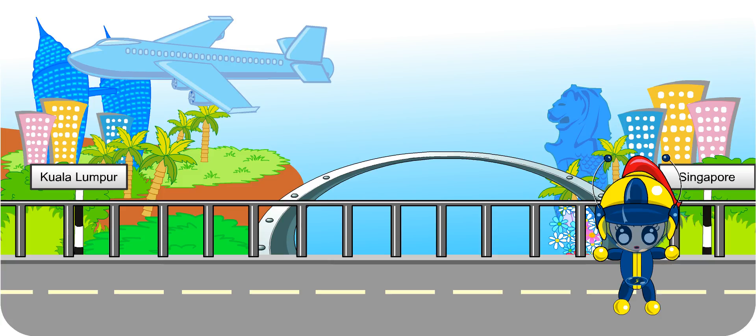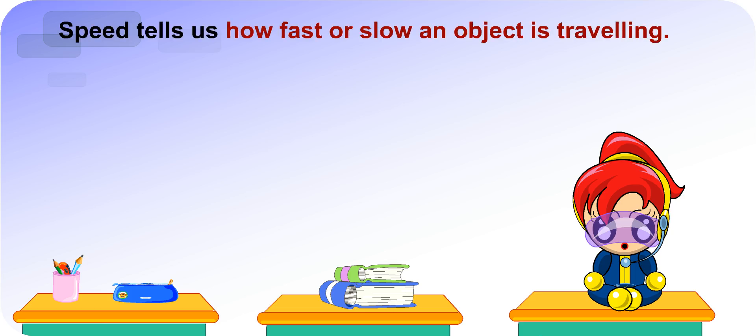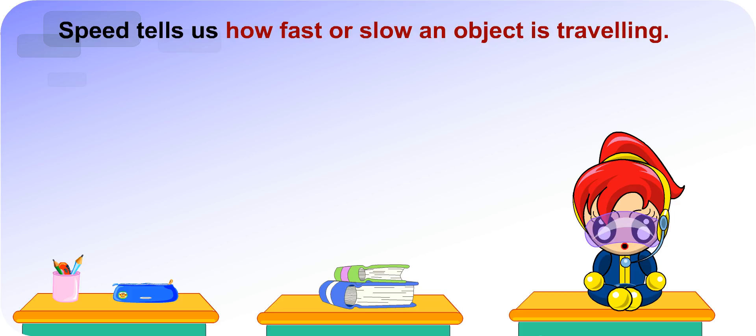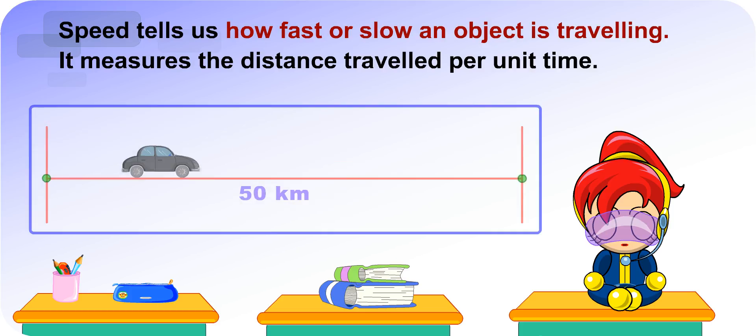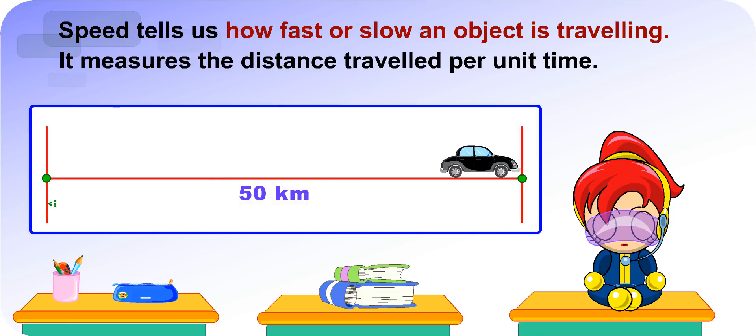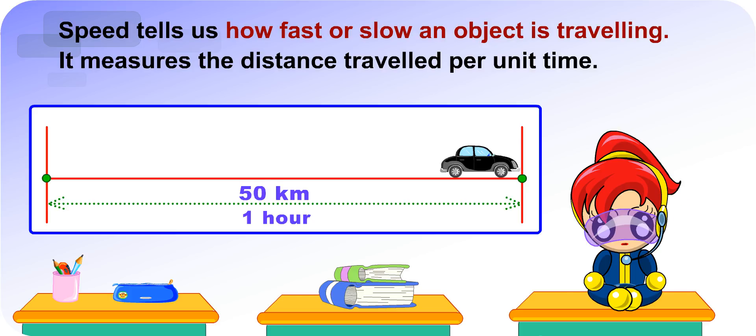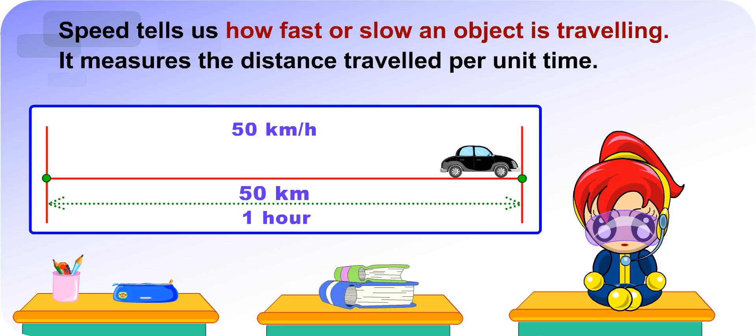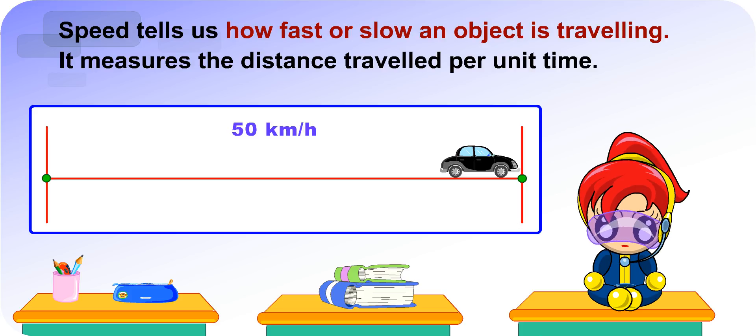Good. Teacher, so speed tells us how fast or slow an object is travelling. Yes, it measures the distance travelled per unit time. For example, if a car can cover 50 km in one hour, we say that the speed of the car is 50 km per hour. 50 km/h is read as 50 km per hour.